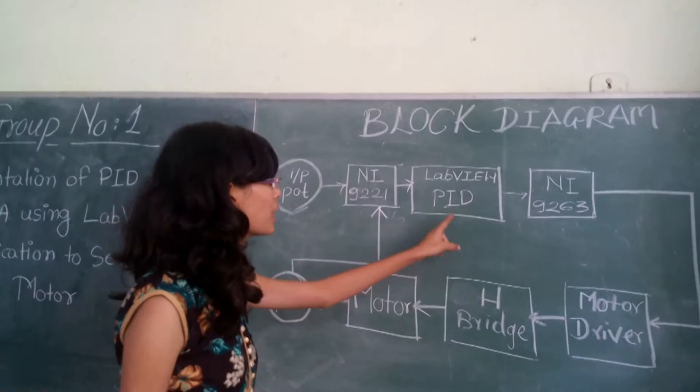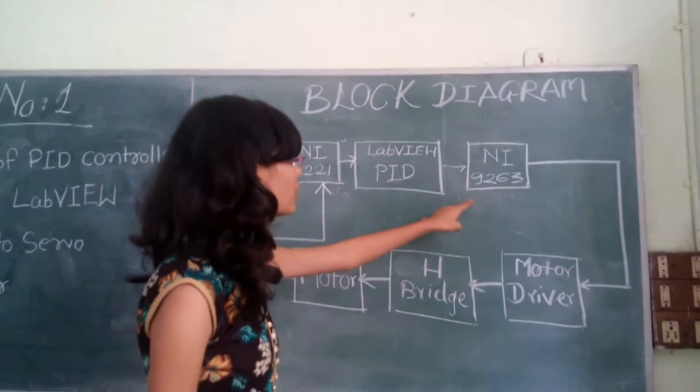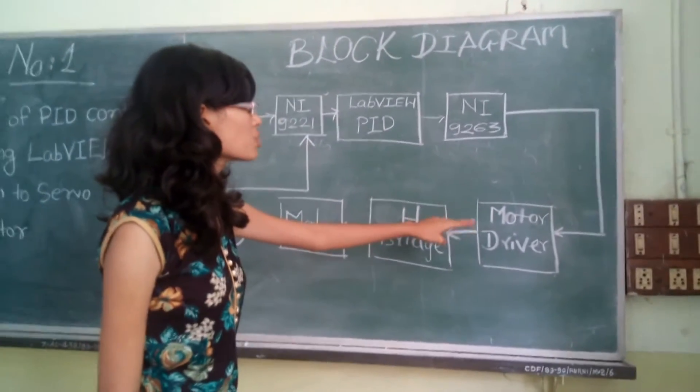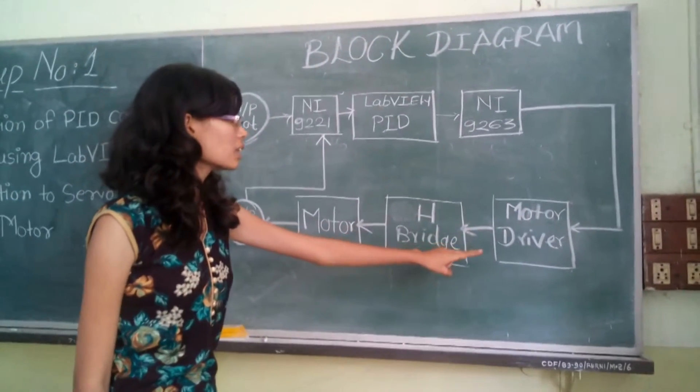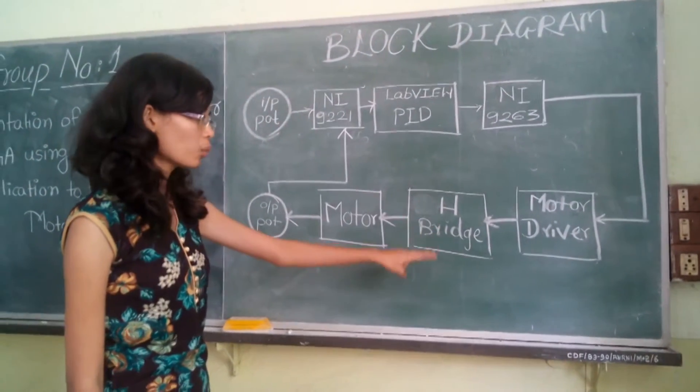Then the output of the PI controller, that is the error, is given to the output module that is 9063. It is then given to the motor driver circuit for boosting the current. The motor driver circuit output is then given to H-bridge which is used to rotate the motor in both the directions.